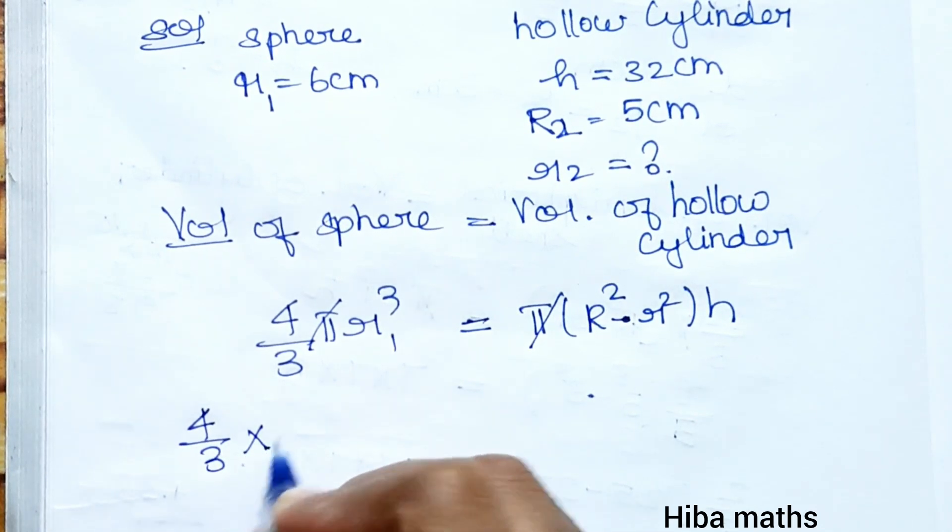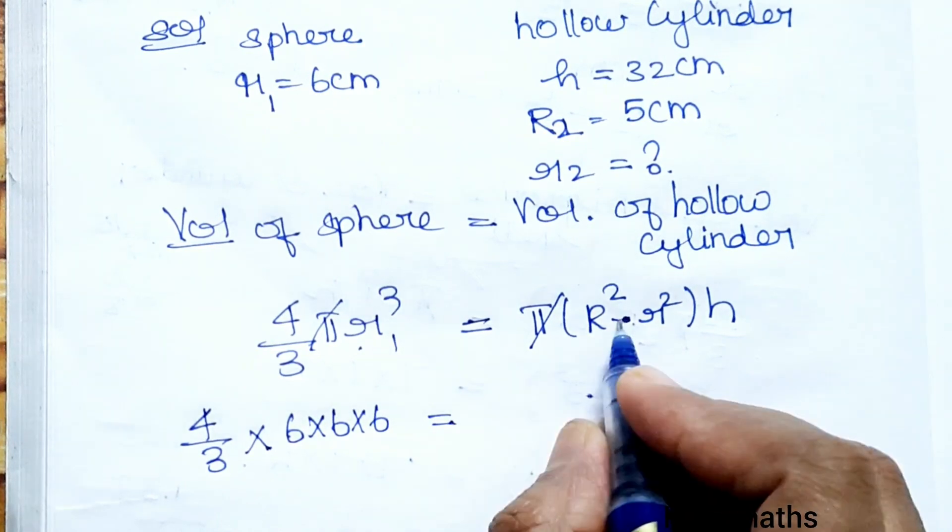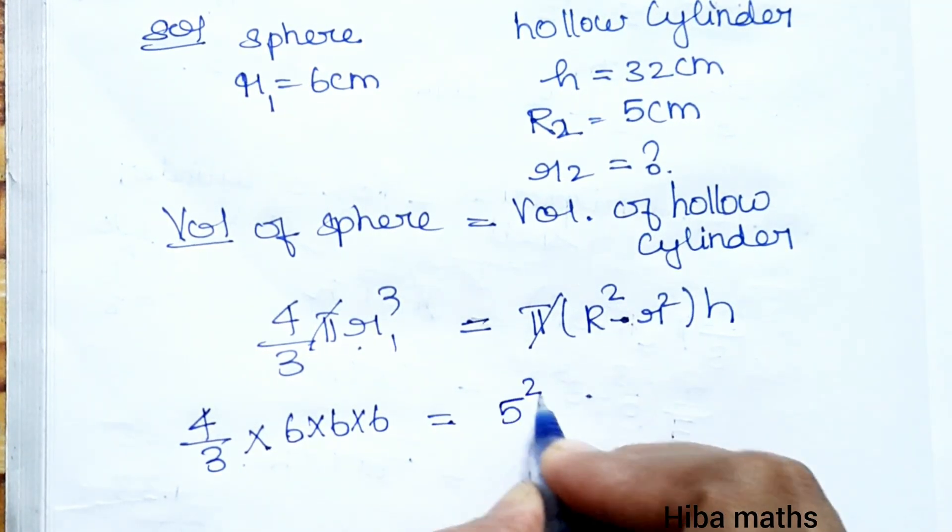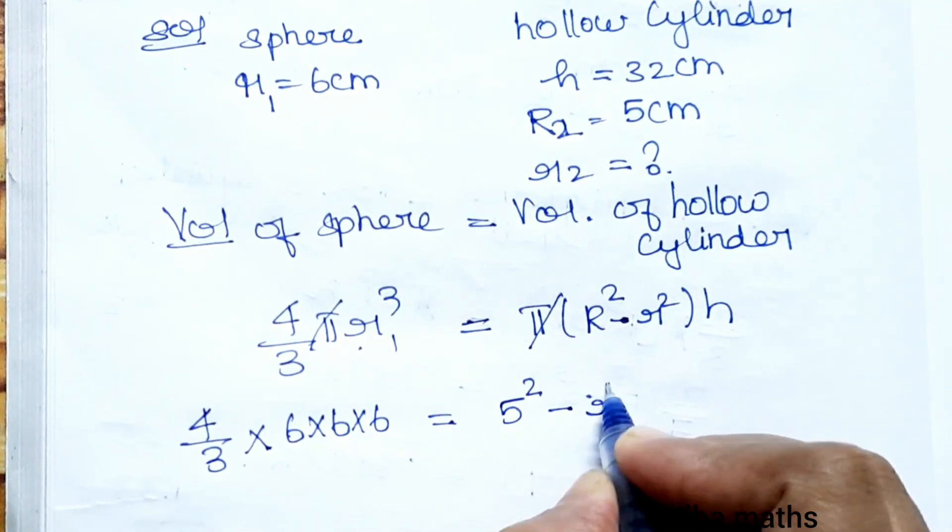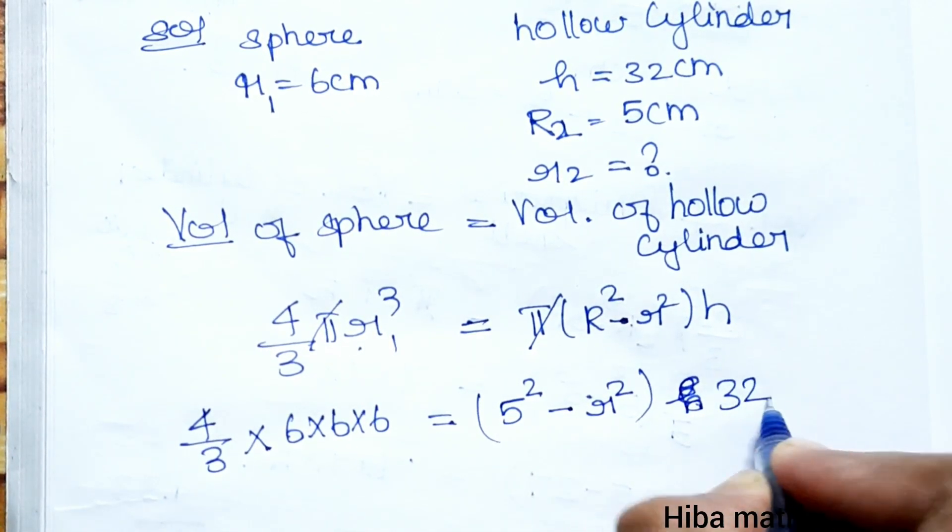4/3 × 6³ equals (5² - r²) × 32. Capital R² is 5², minus small r² times h, h value is 32.